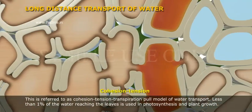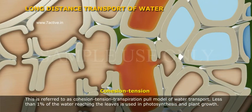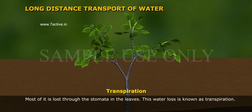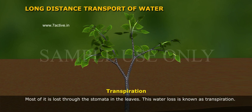Less than 1% of water reaching the leaves is used in photosynthesis and plant growth. Most of it is lost through the stomata in the leaves. This water loss is known as transpiration.